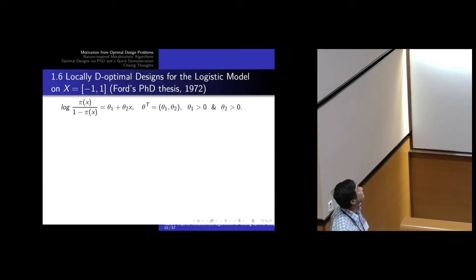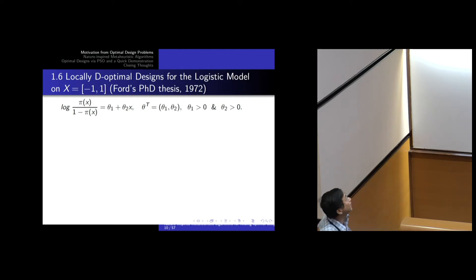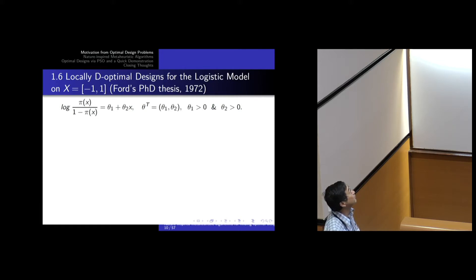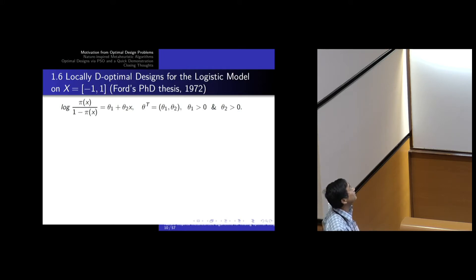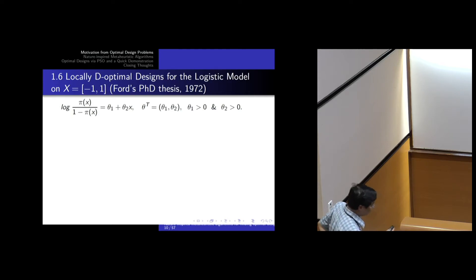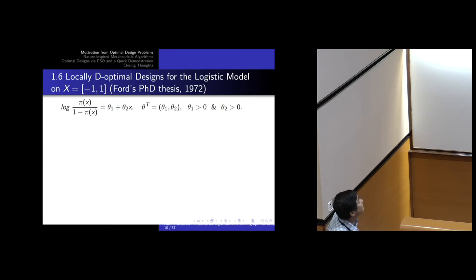Consider the logistic model, which many have seen before. If I ask how to take observations from a given interval to best estimate theta one and theta two — meaning you're guaranteed the smallest confidence ellipsoid area — that's a nontrivial problem. You can compute the Fisher information matrix and find which allocation scheme optimizes its determinant. It turns out the solution requires partitioning the parameter space carefully, and was reported in a thesis.